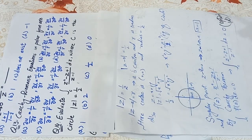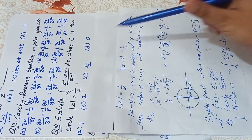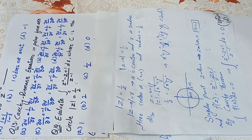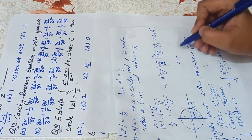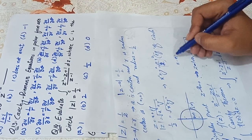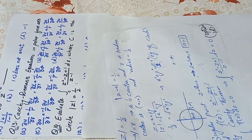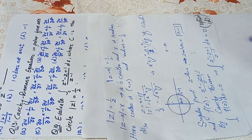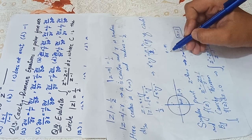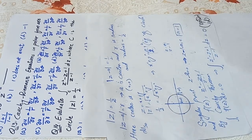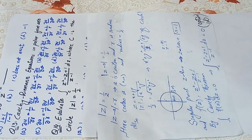Now we need to check what the singular point is. From the denominator, set Z − 1 = 0, giving Z = 1. Equivalently, if the denominator has Z − A, then A is the singular point — the value where the given function becomes undefined. Comparing Z − A with Z − 1 here, the singular point A = 1.